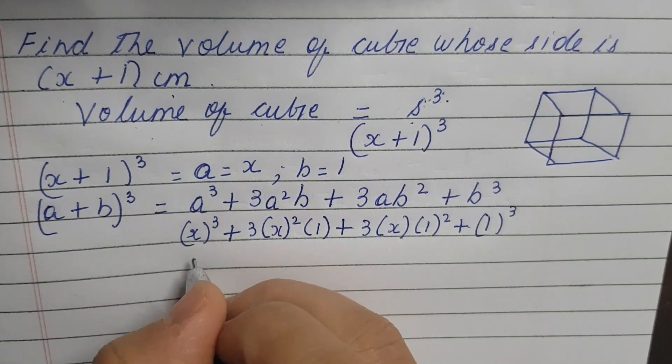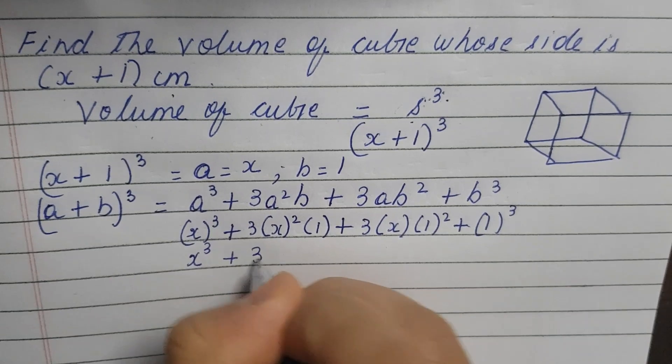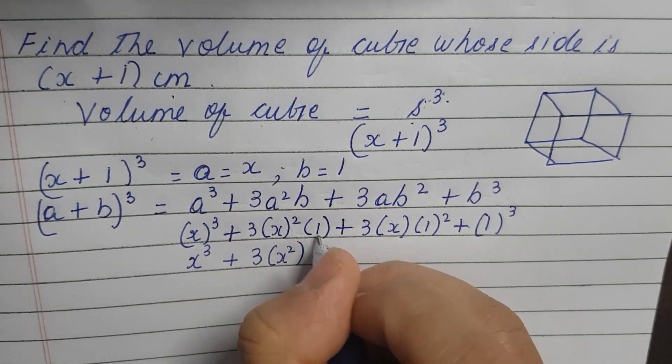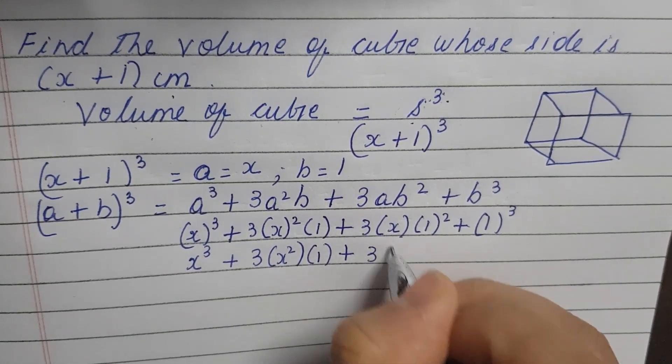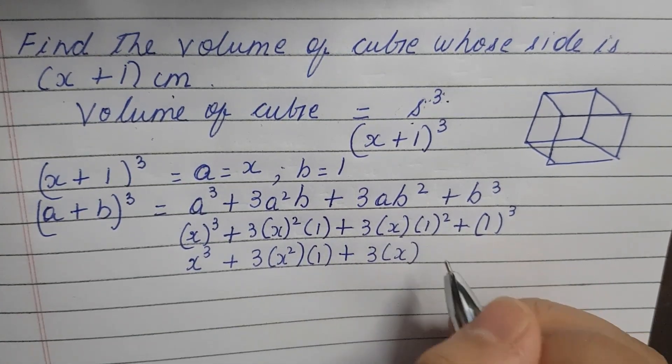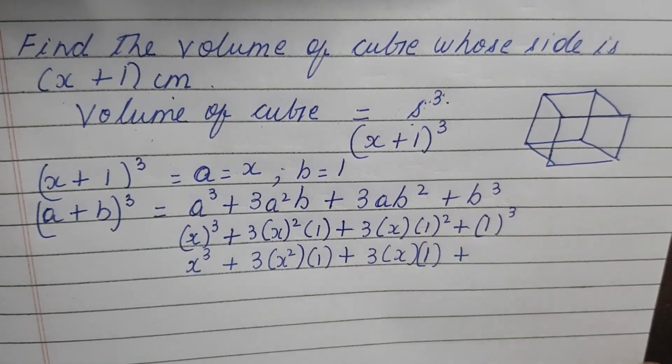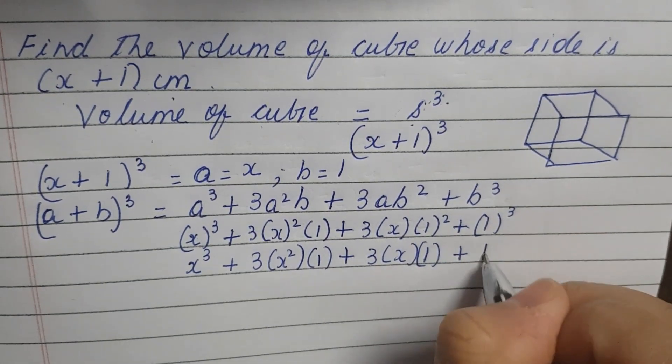Okay now x³ is nothing but x to the power 3 plus 3x² into 1, plus 3 into x into 1 to the power 2 is nothing but 1, so again 1 plus 1 to the power 3 is 1.